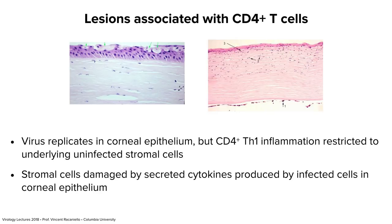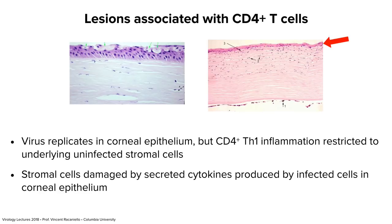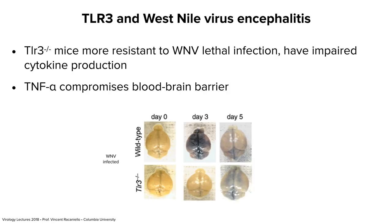Dengue was almost eradicated in the southern hemisphere when DDT was used to kill mosquitoes. After DDT was banned in 1981, mosquitoes came back and dengue spread, aided efficiently by the used tire trade — ships carrying used tires accumulate rainwater in which mosquitoes live and breed, spreading them globally.